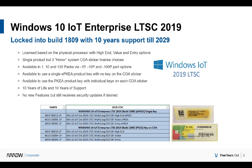The other option, if you want the key code on the sticker, is the bottom three part numbers — called PKEA. Every single sticker will have a new key on it, and you will have to change that key on every system you load and activate. Some customers want the key on the sticker, but most of our customers go with the single key and no key on the sticker.